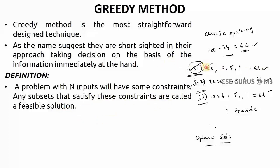Any subset that satisfies these constraints are called as feasible solution. Now, this subset is satisfying, this subset is satisfying, this subset like this. Every subset you call it as feasible solution.